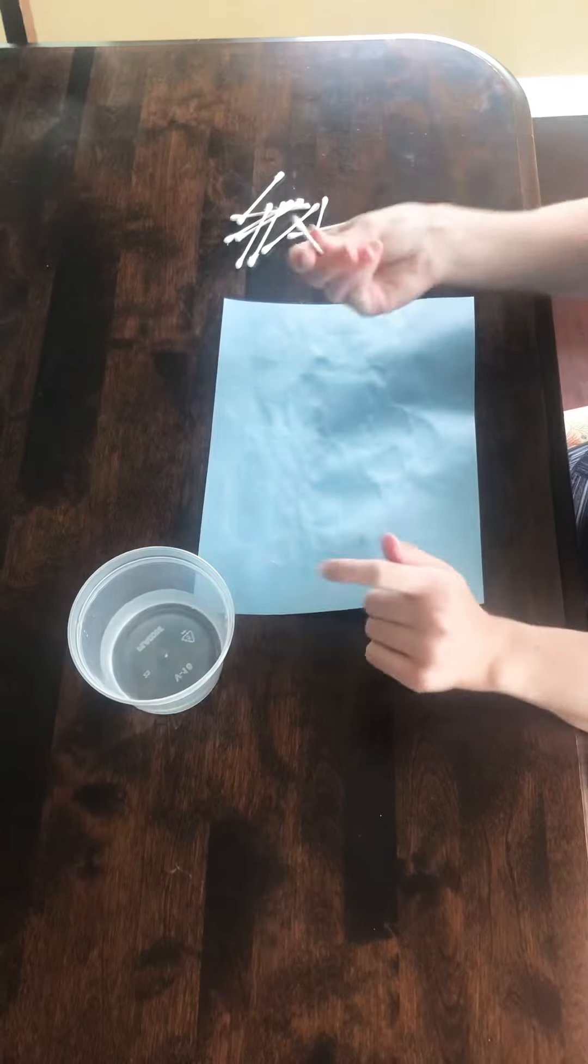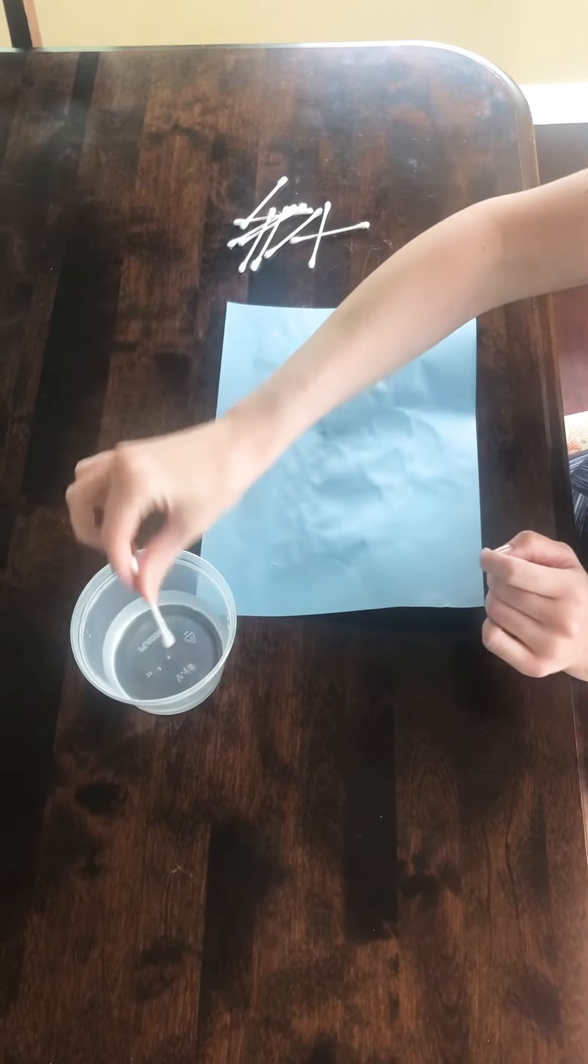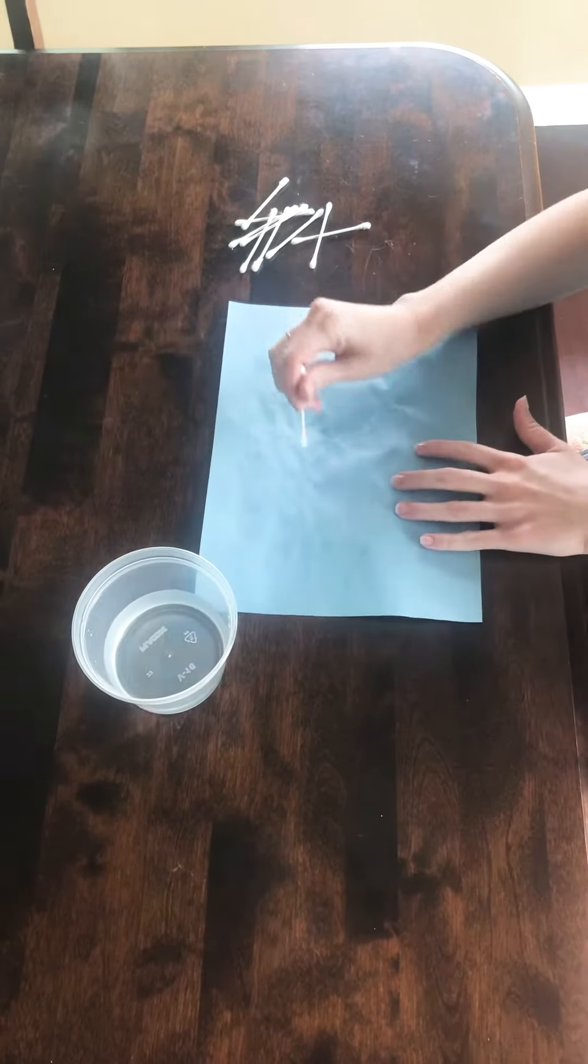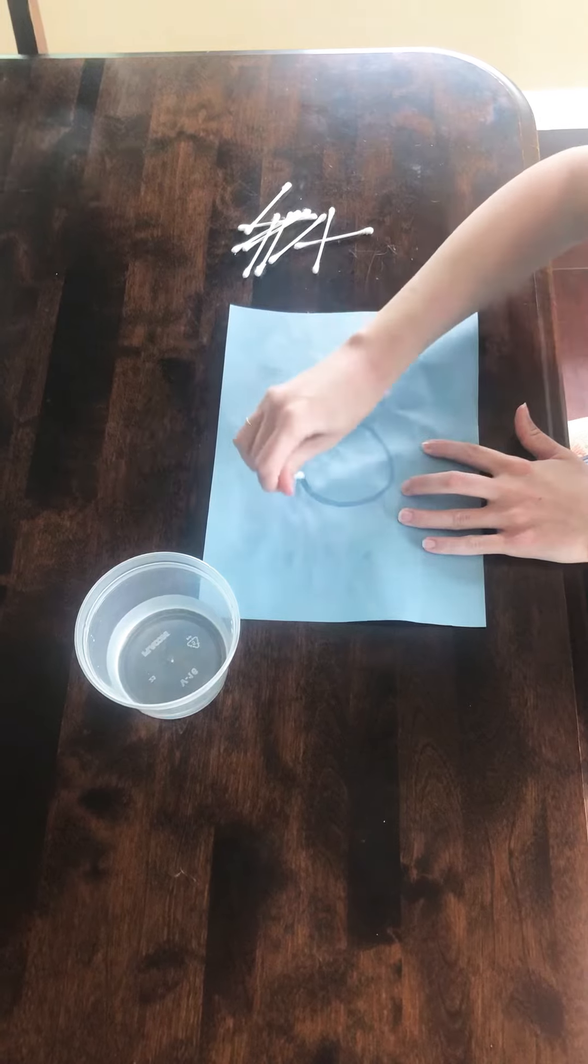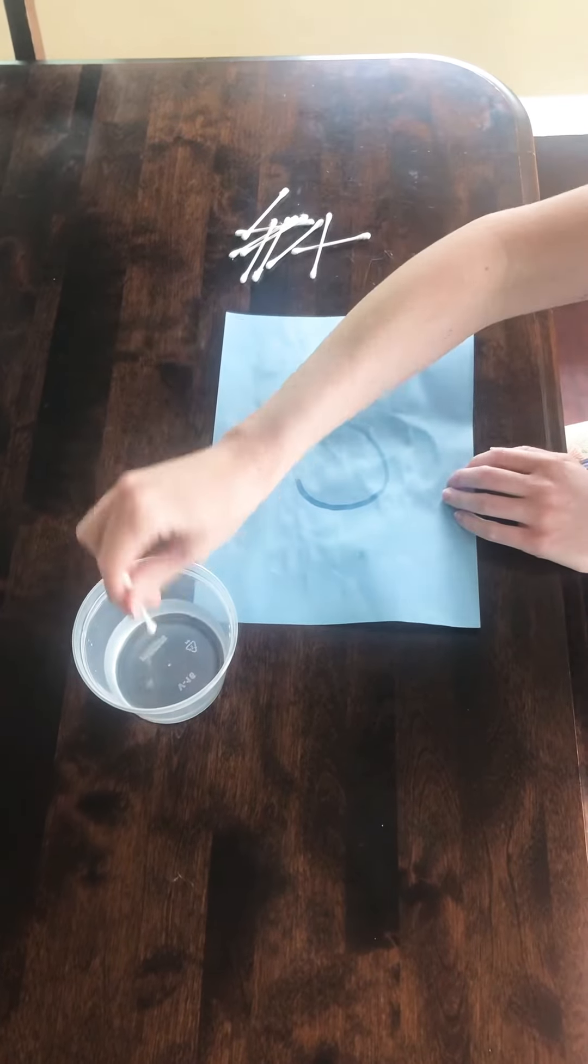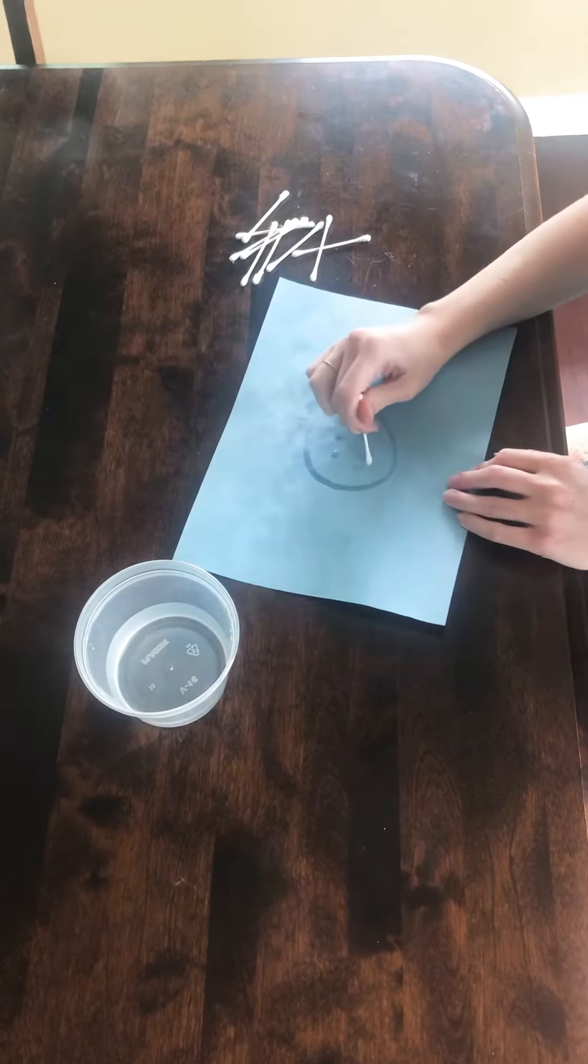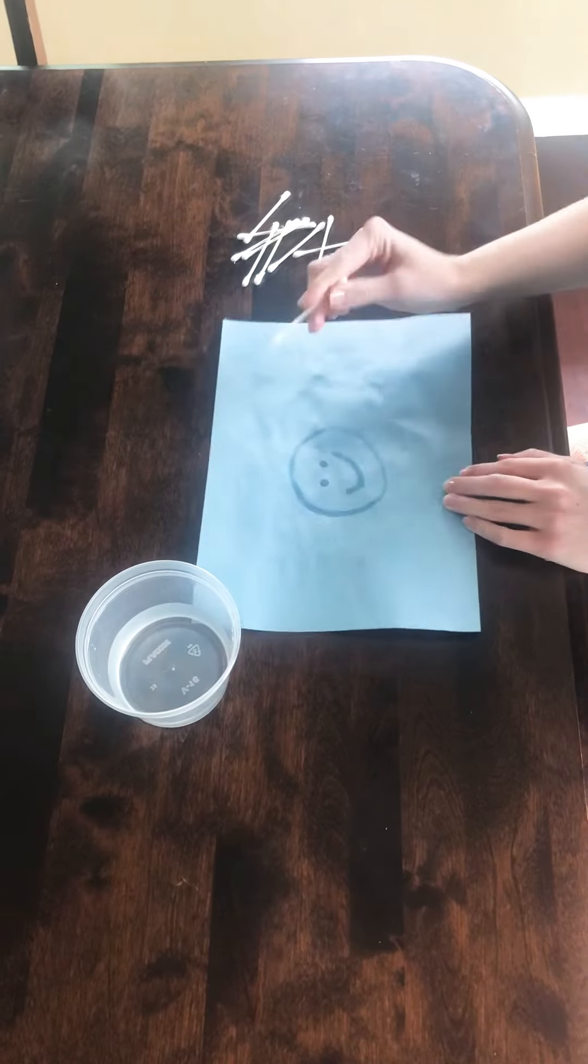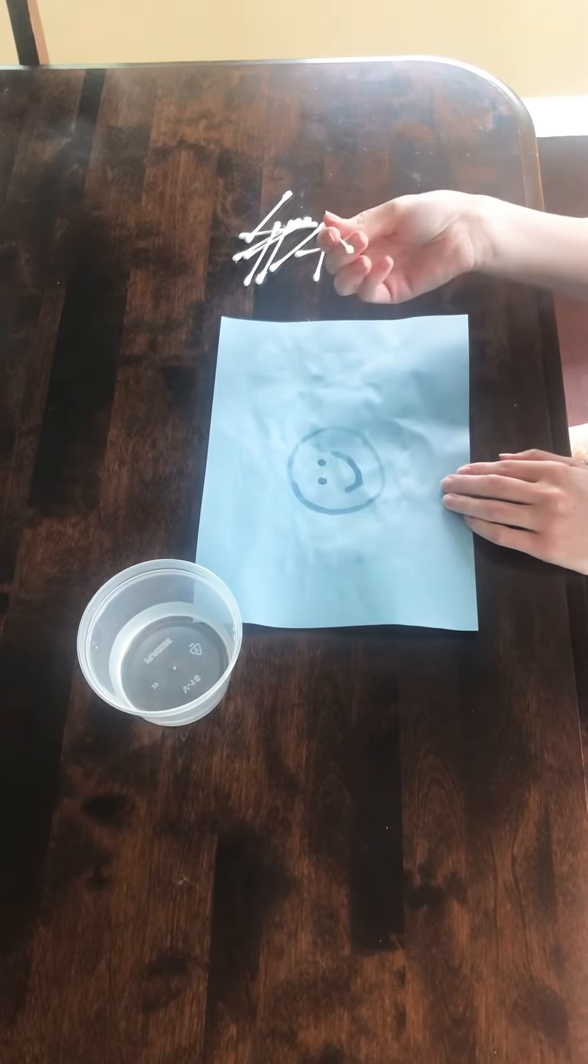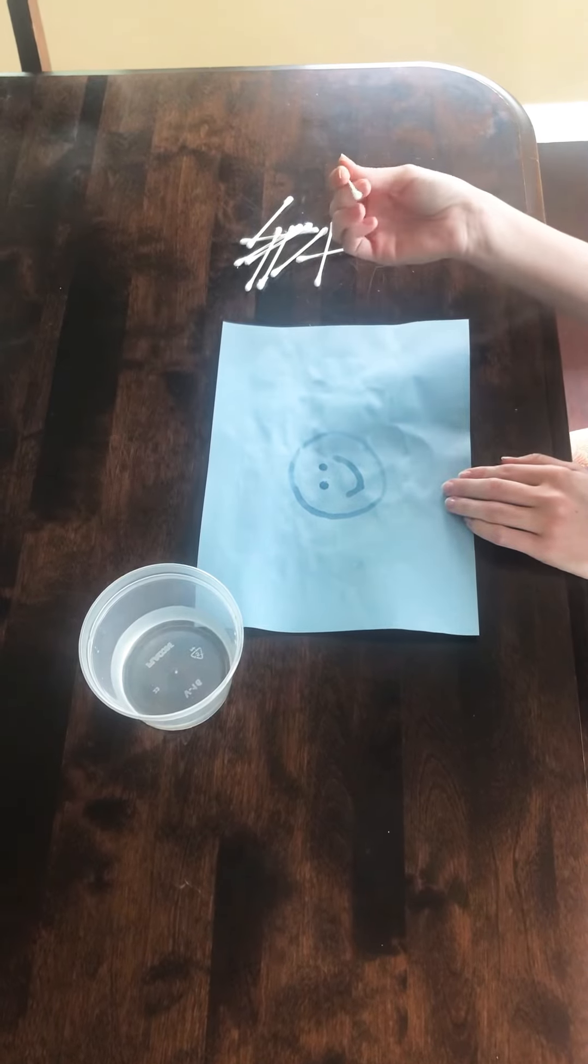With the water and q-tips, you just dip it in and it becomes your paintbrush. You can use it to write, and since it's construction paper the water shows up really well. The great thing about this is when it's dry you can reuse the paper. We're also being green for the environment.